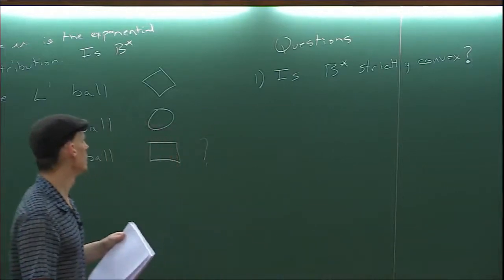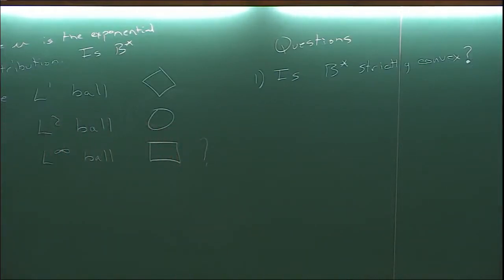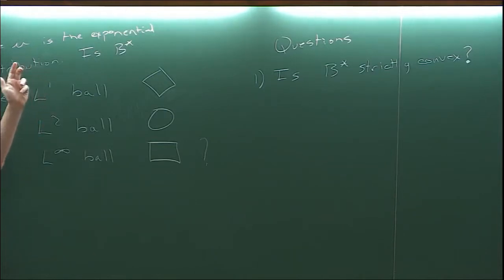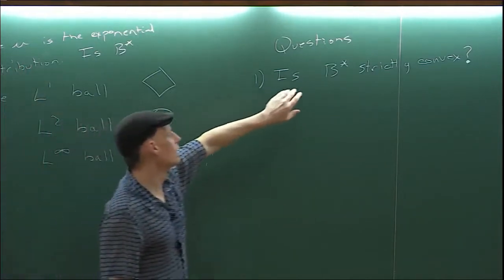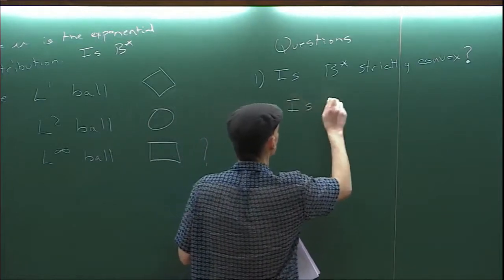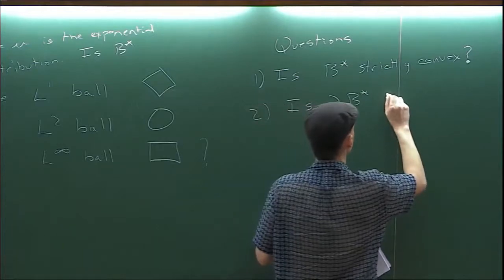One thing that would be really nice to know: I said the shape is convex, but it could be that it has flat edges. There are distributions mu where you can get a flat edge in the boundary shape — that's also a theorem of Cox and Durrett. If you compare with oriented percolation you can write down a distribution mu that gives flat pieces.